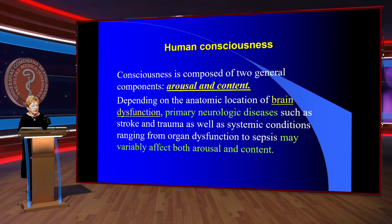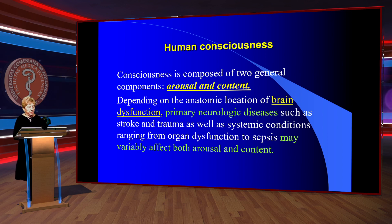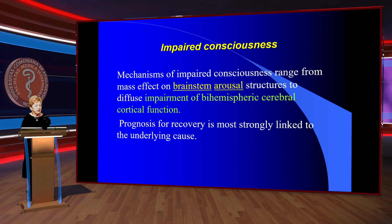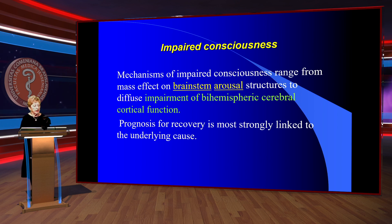Our consciousness is composed of two general components: arousal and content. Depending on the anatomic location of brain dysfunction, primary neurologic disease such as stroke and trauma, as well as systemic conditions ranging from organ dysfunction to sepsis, may variably affect both arousal and content. Impaired consciousness mechanisms range from mass effect on brainstem arousal structures to diffuse impairment of hemispheric cerebral cortical function.